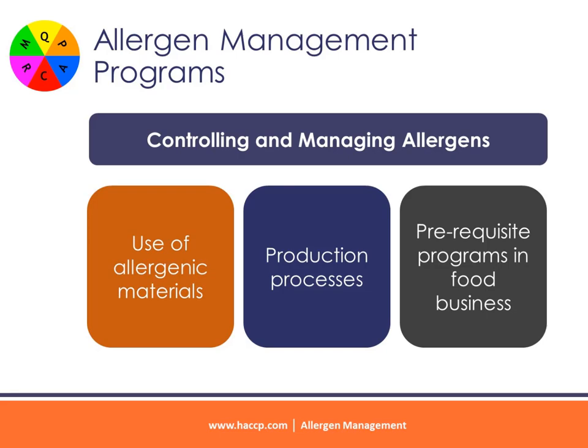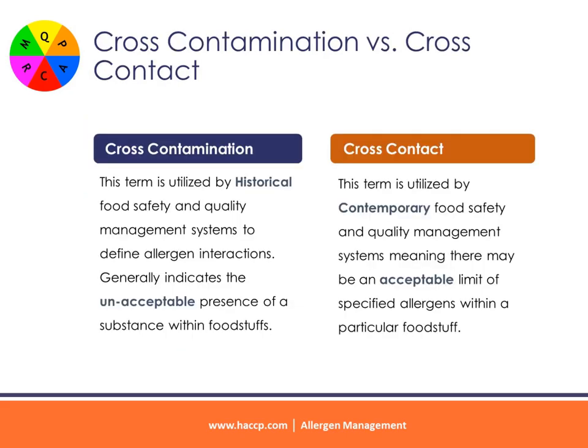Allergen management programs should be applied with the intent of controlling and managing the use of allergenic materials, production processes, and prerequisite programs within any food business. Historical food safety and quality management systems utilized cross-contamination as a term to define allergen interactions. Contemporary food safety and quality management systems use the term cross-contact, meaning there may be an acceptable limit of specified allergens within a particular foodstuff. The term cross-contamination generally indicates the unacceptable presence of a substance within foodstuffs.